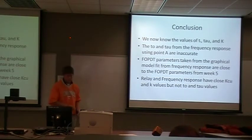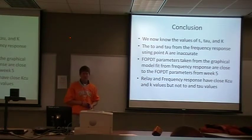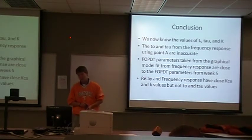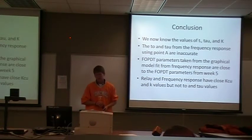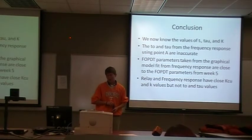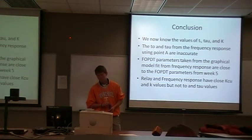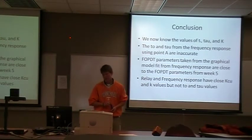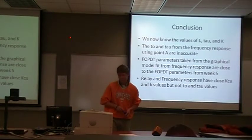In conclusion, we now know the T-naught, tau, and K values. The T-naught and tau from the frequency response using the point method are very inaccurate. The FOPDT parameters taken from the graphical model fit for frequency response are close to the FOPDT parameters from week 5. The relay and frequency response have close KCU and K values, but not close T-naught and tau values.